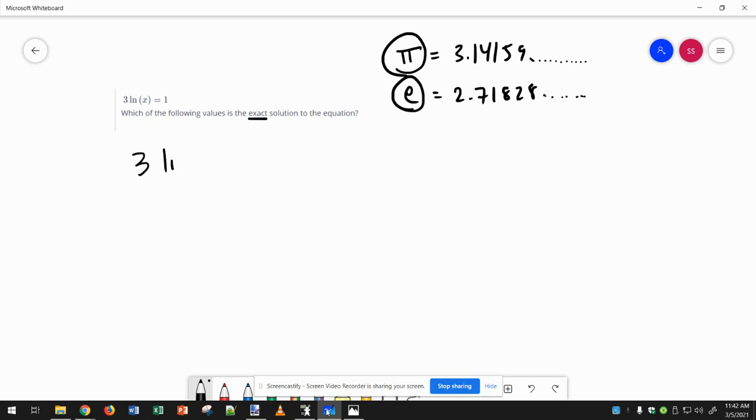So when I solve this equation, first I have to get rid of this 3 by dividing both sides by 3, and I get natural log of x equals 1 third.